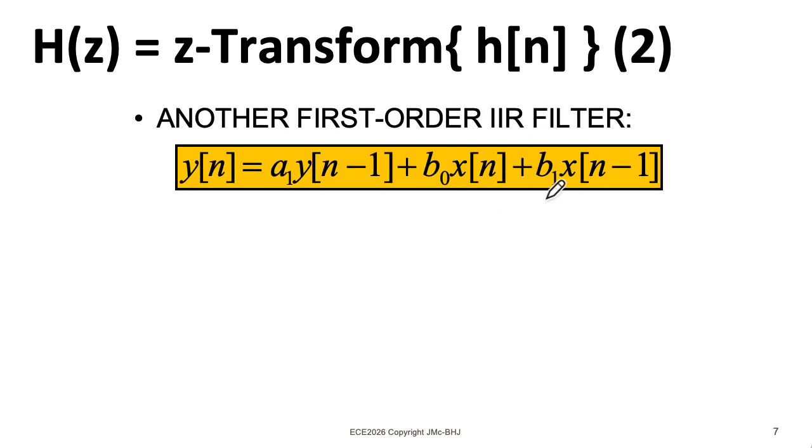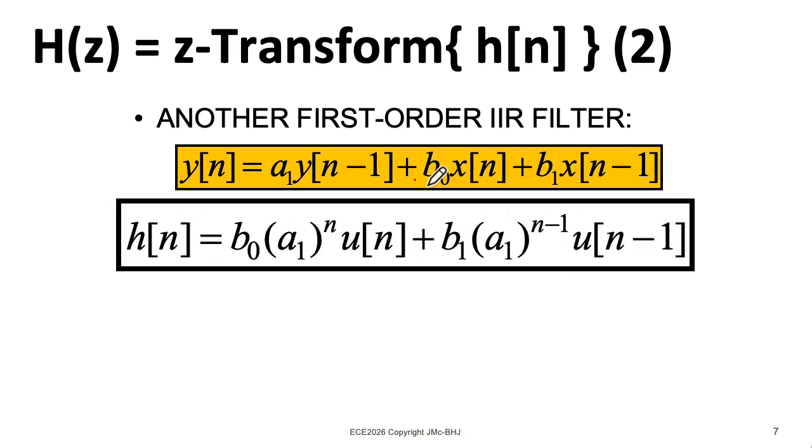Now what if I wanted to find the impulse response of this more complicated system, where in addition to this b_0 x[n] term, I have this b_1 x[n-1] term. The key here is to realize that it's a linear time invariant system. So I could think about what the output would be for this particular input, and then separately think about what the output would be for this particular input, and then add the resulting outputs.